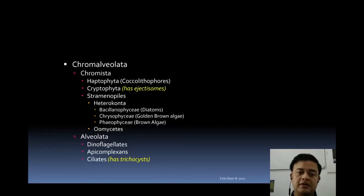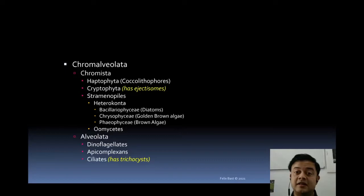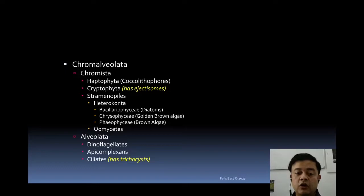Straminopiles include Heteroconts and Oomycetes as two major divisions. Heterocont — hetero meaning 'different' and cont meaning flagella — refers to two flagella unequal in size. Inside Heteroconts there are three main groups: Bacillariophysia (diatoms), Chrysophysia (golden brown algae), and Phaeophysia (brown algae). The three major groups of Alveolates are dinoflagellates, apicomplexans, and ciliates.